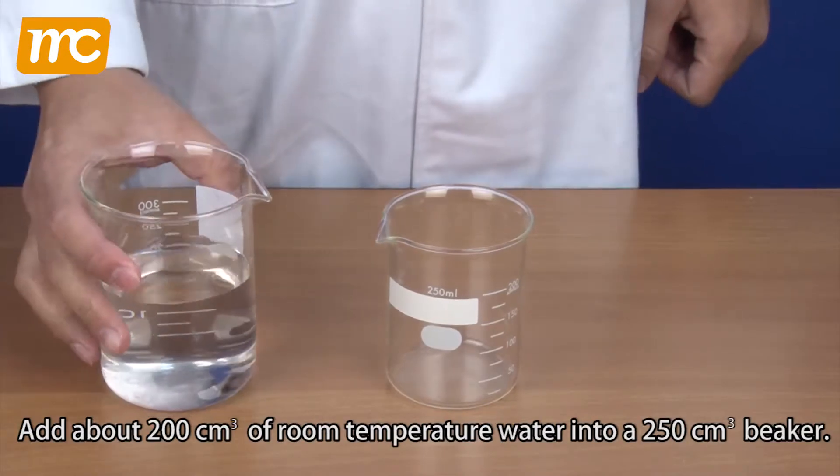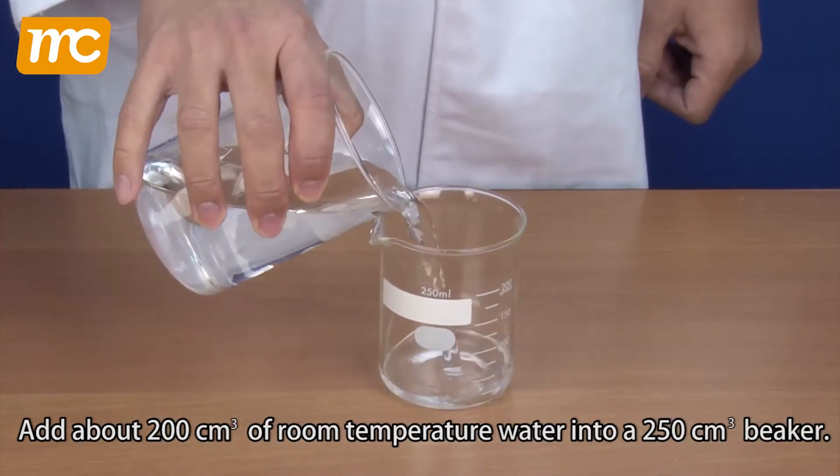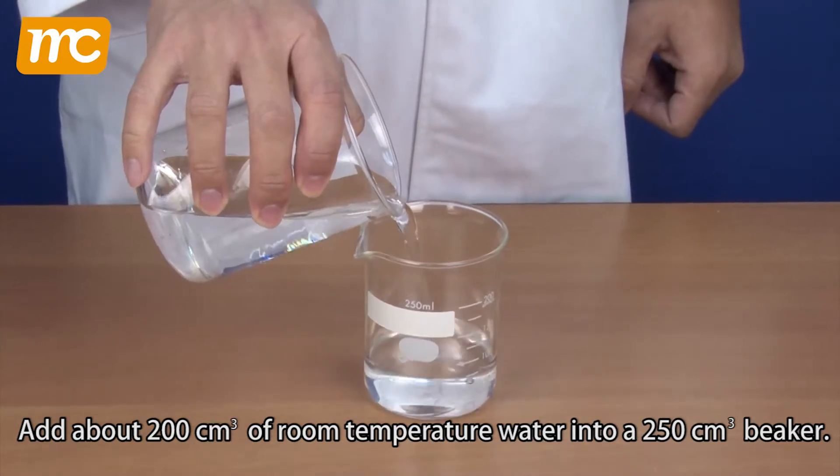Add about 200 cubic centimeters of room temperature water into a 250 cubic centimeter beaker.